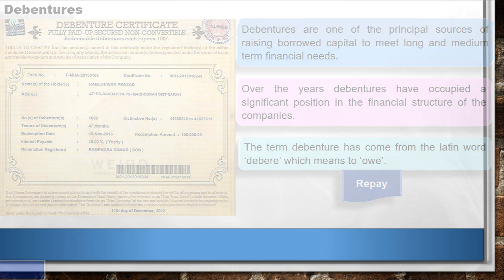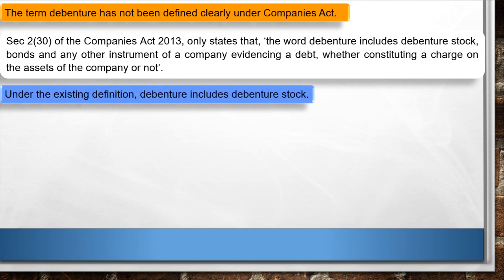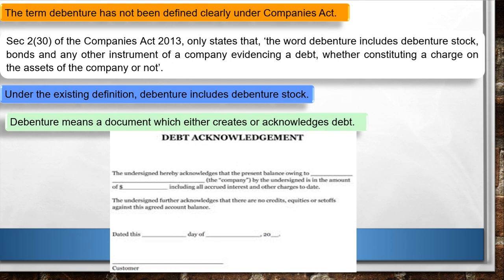The term debenture has not been defined clearly under the Companies Act. Section 2, Subsection 30 of the Companies Act 2013 only states that the word debenture includes debenture stock, bonds, and any other instrument of a company evidencing a debt, whether constituting a charge on the assets of the company or not. Debenture means a document which either creates or acknowledges a debt.